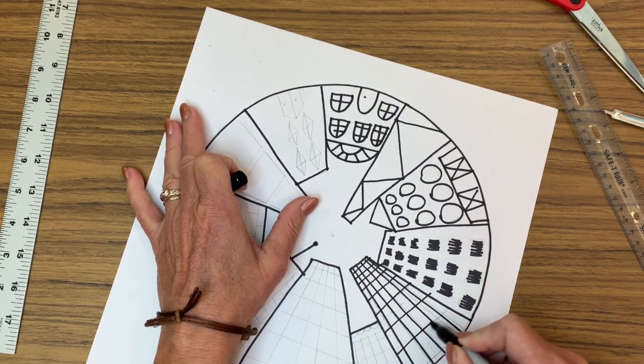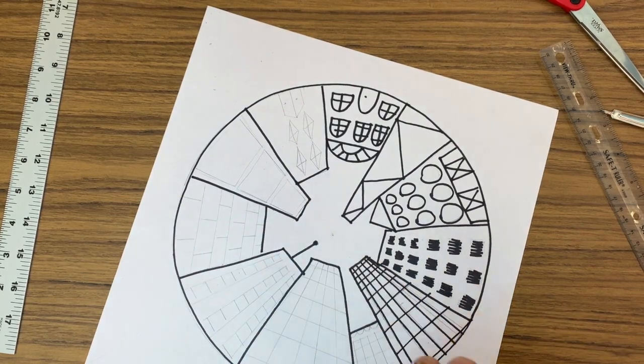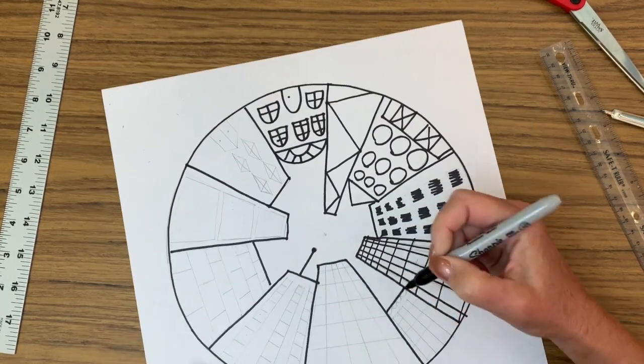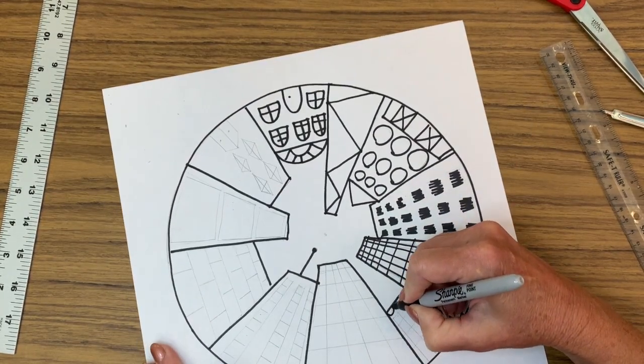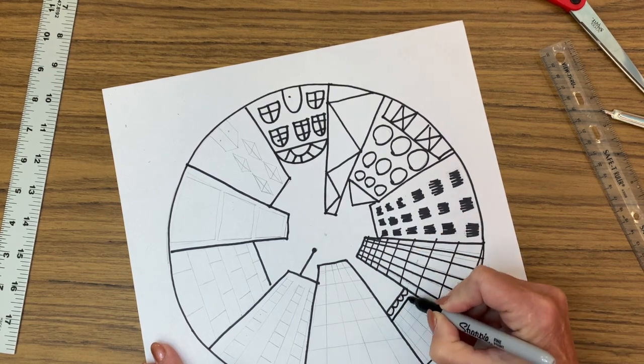If I was to draw straight lines on the building, it wouldn't make sense. Everything has to appear to be going that way. You can really begin to see our worm's eye view coming to life and you can see where the vanishing point is.